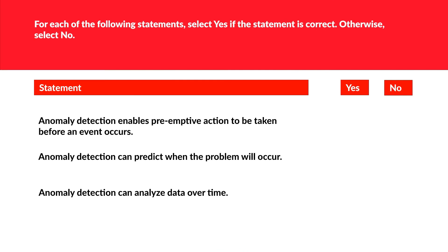The next question is about anomaly detection, relevant to credit card fraud scenarios. First statement: anomaly detection enables preemptive action to be taken before an event occurs — true, for example detecting an unusual large deposit. Second: anomaly detection can predict when a problem will occur — no, it detects after the fact but cannot forecast future occurrences. Third: anomaly detection can analyze data over time — yes. So the correct options are the first and third statements.